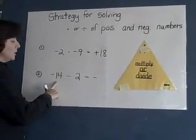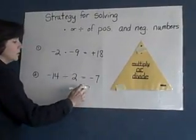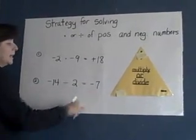Now I simply divide. 14 divided by 2 equals 7. My answer is negative 7. A negative divided by a positive equals a negative.